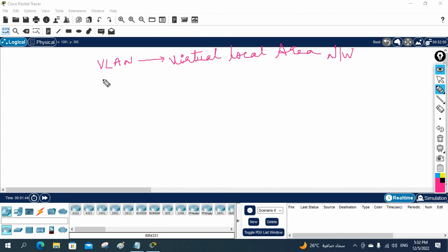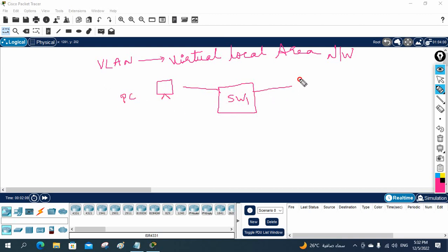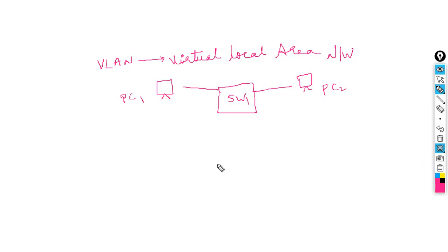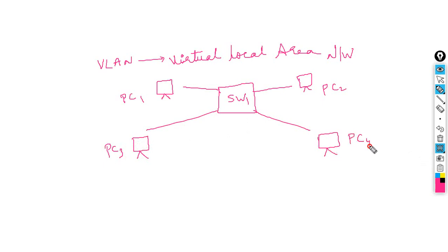The main advantage of using VLAN is that it divides a single broadcast domain into multiple broadcast domains. For example, take a switch with PC1, PC2, PC3, and PC4 connected to it.